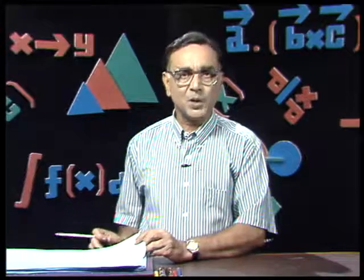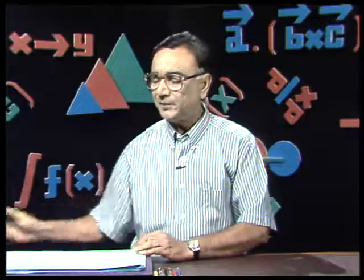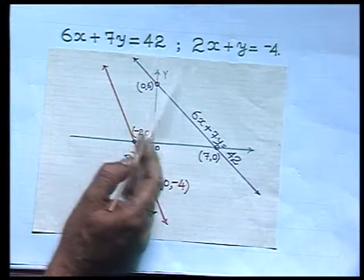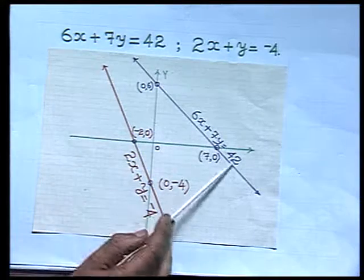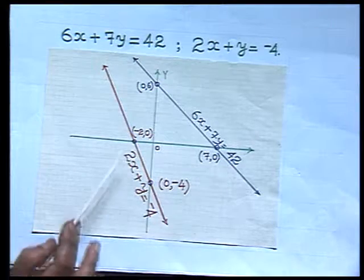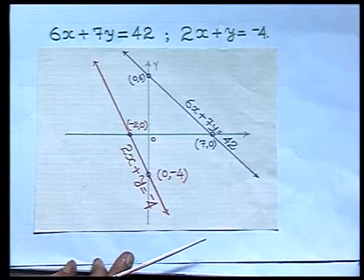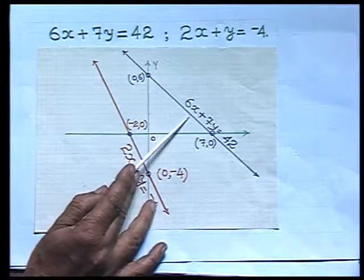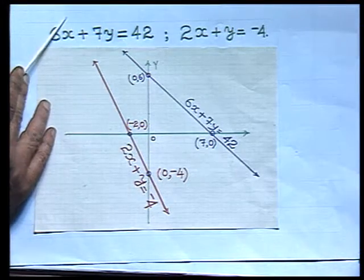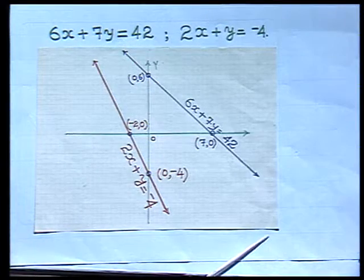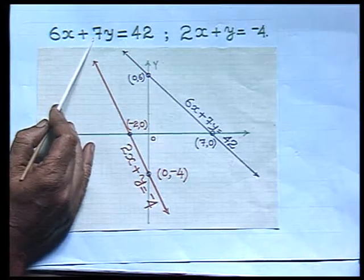Let us look at another problem. Here I have drawn the graph for the two equations: 6x plus 7y equals 42 and 2x plus y equals minus 4. The graph has been plotted. Now, if I extend these lines one way they would not meet, but they can meet if extended the other way. However, there is a limitation of the graph paper — they will intersect outside the graph paper. That means this graph paper is not sufficient to get the point of intersection.